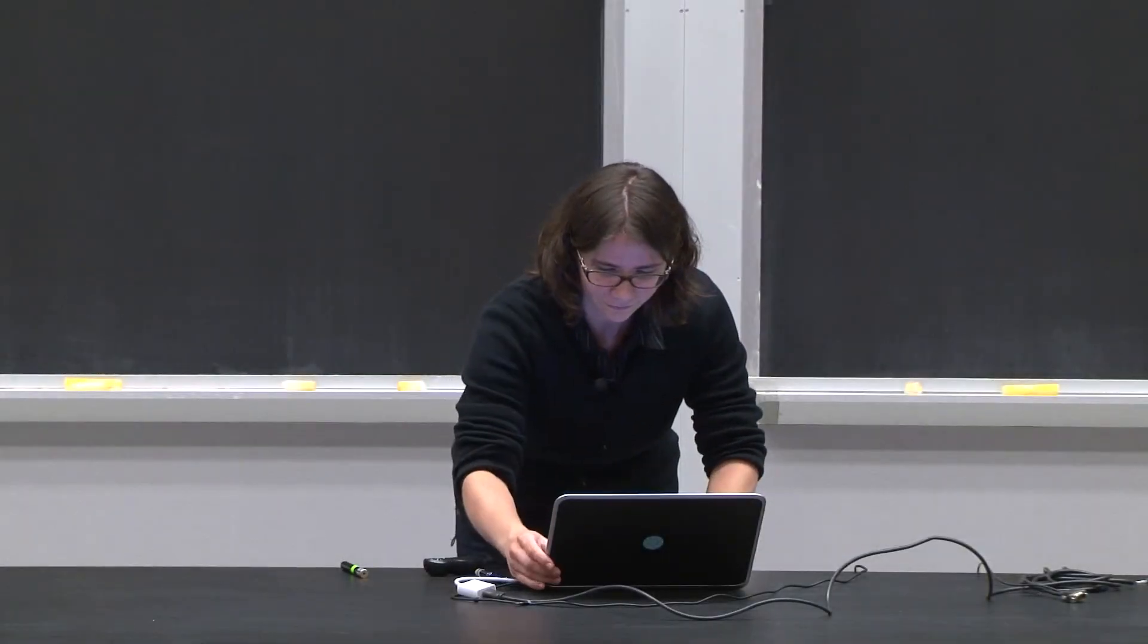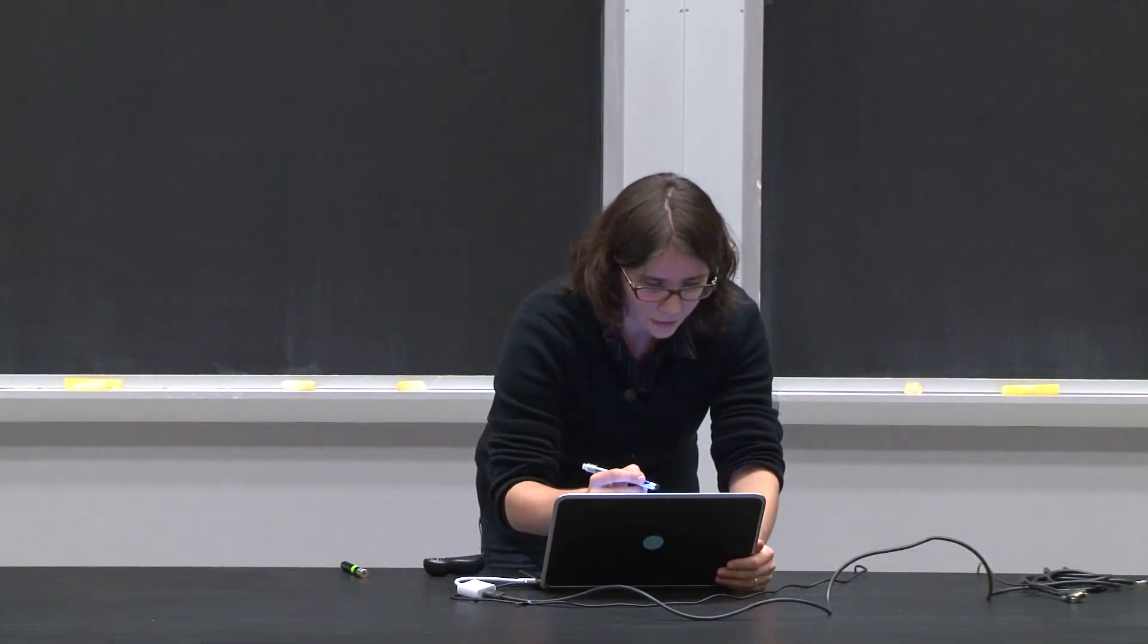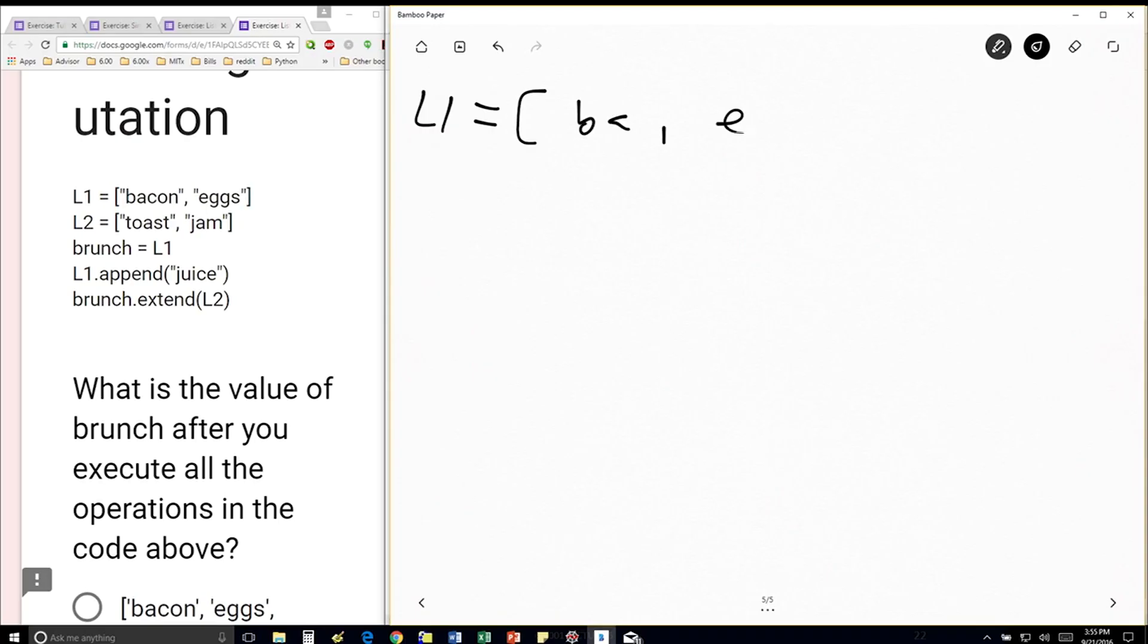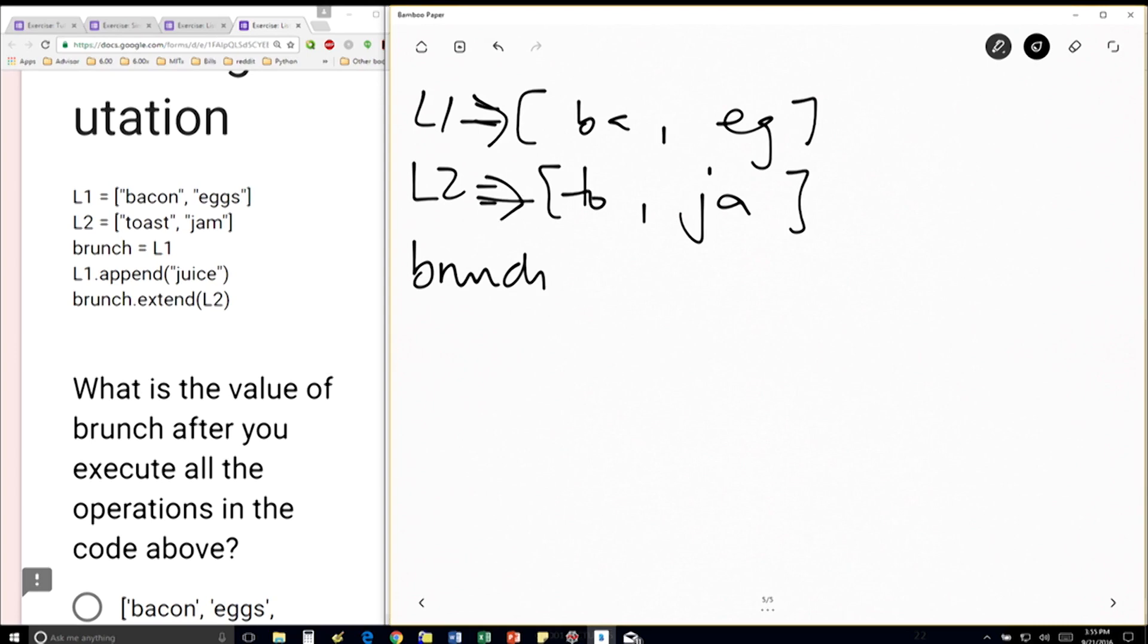All right, so let's see. So first, we have L1 is equal to bacon, eggs. I'm going to shorthand this. L2 is equal to toast and jam. Brunch, I should actually make these arrows. Brunch is equal to L1. So this is just aliasing, which means brunch is going to point to whatever L1 object points to.